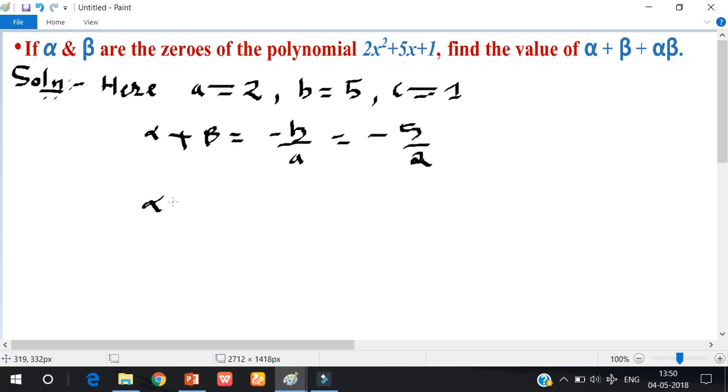And product of zeros, alpha beta, equals c by a, so 1 by 2.